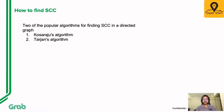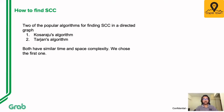Now let's talk about how to find SCCs. There are several ways — two of the most popular ones are Kosaraju's algorithm and Tarjan's algorithm. Both have similar time and space complexity, which is linear. We chose Kosaraju's because of its ease of implementation. It's worth mentioning that a naive algorithm could take forever to run SCCs among millions of nodes, so let's take a brief look at how Kosaraju's algorithm works.